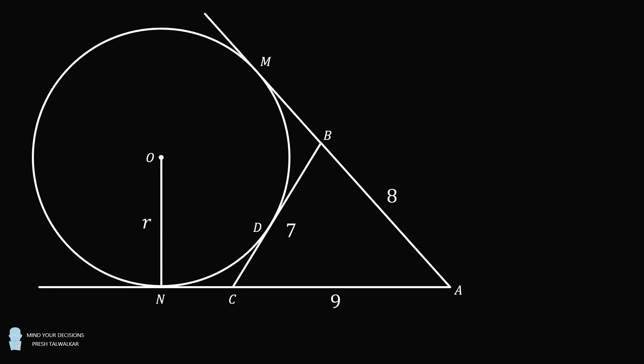First, suppose that BD has a length equal to X. Then DC will have a length that's equal to 7 minus X. BM and BD are congruent because they are both external tangents to the circle. Therefore, BM is equal to X. Similarly, CN and CD have the same length, so CN has length 7 minus X.